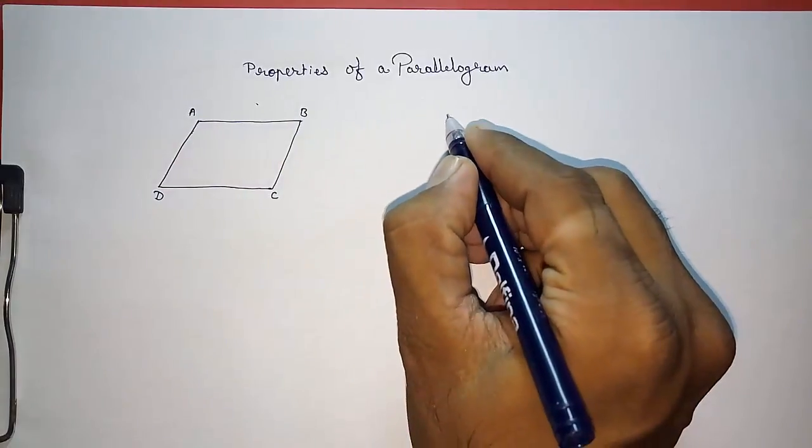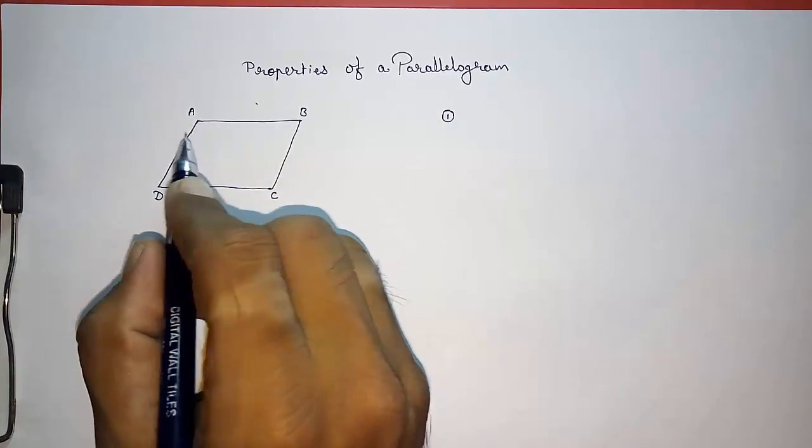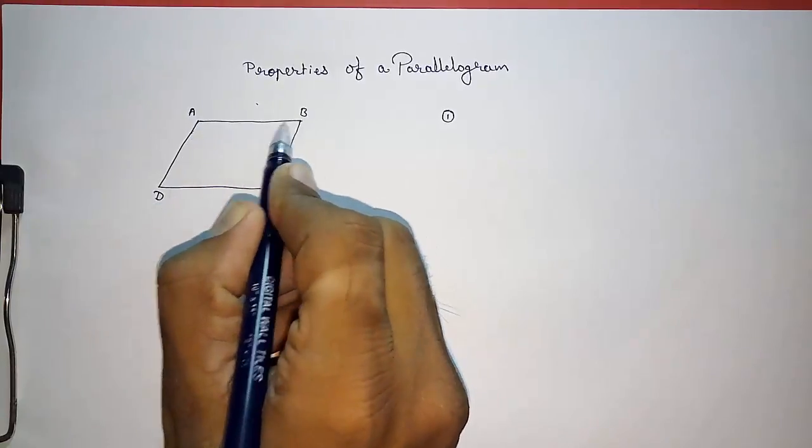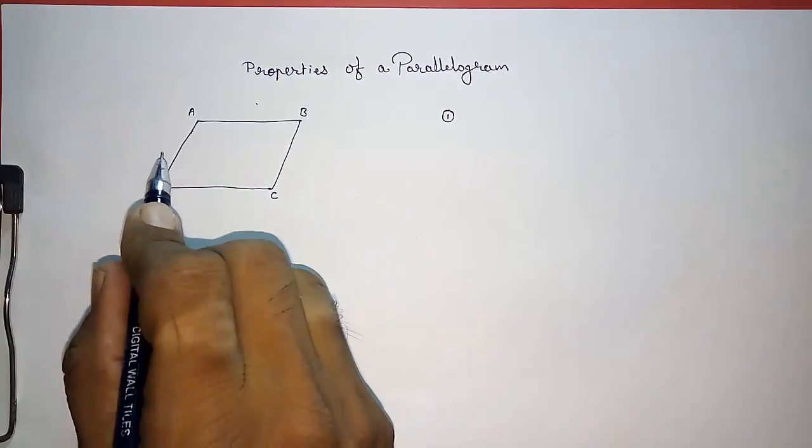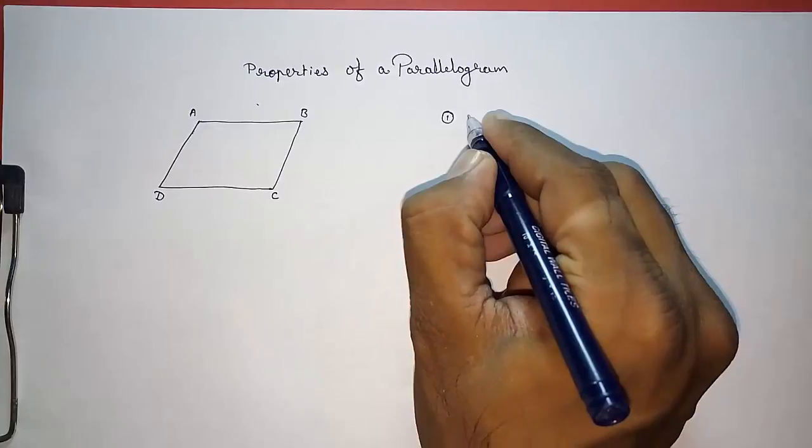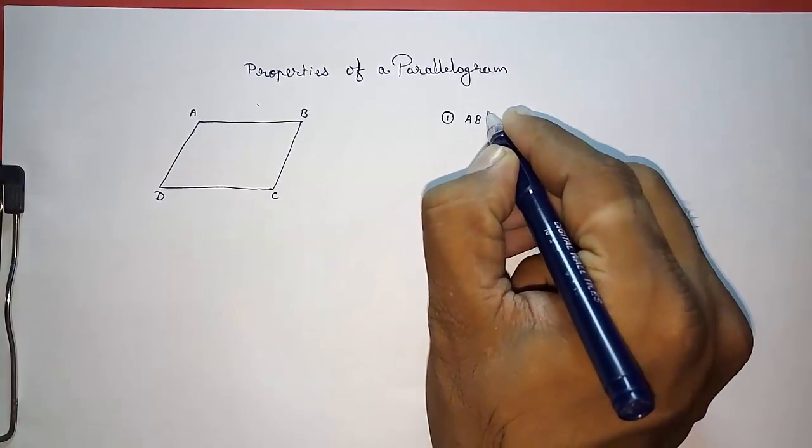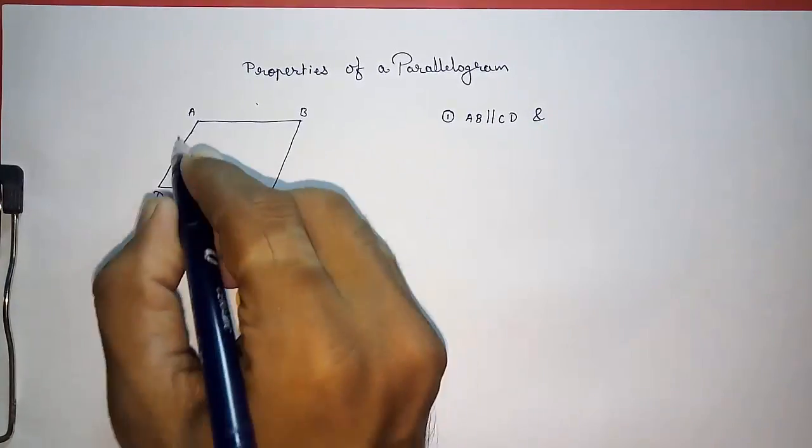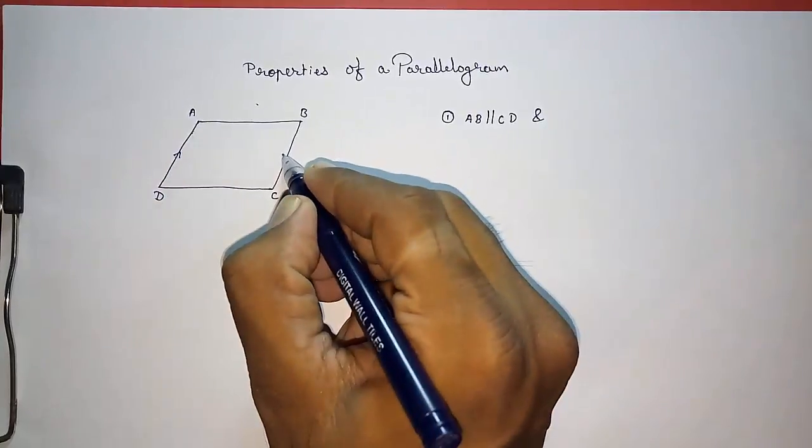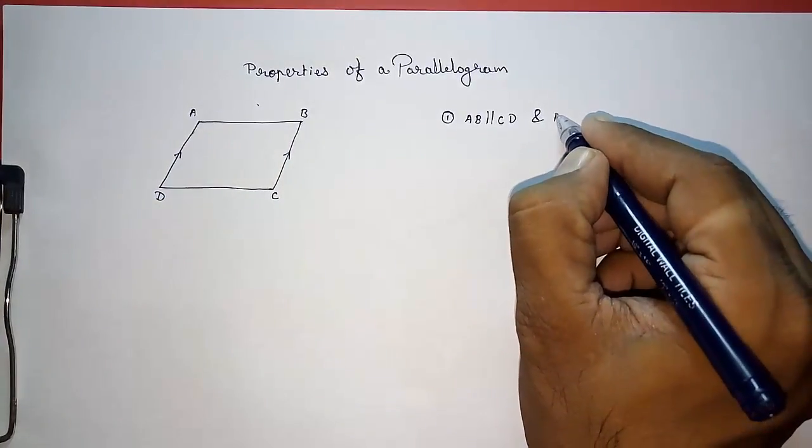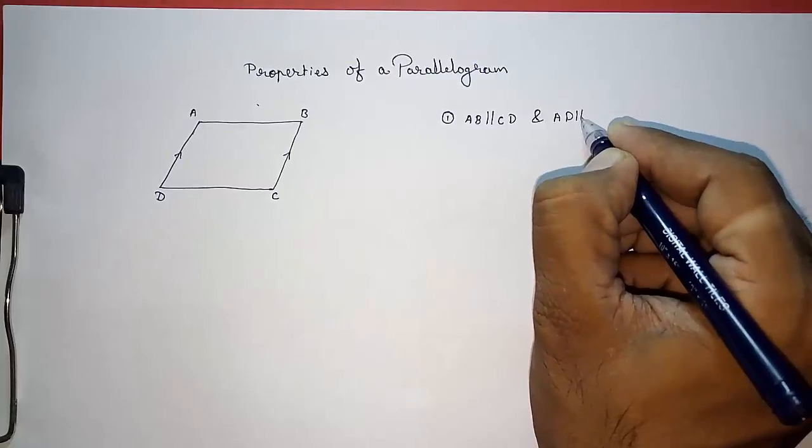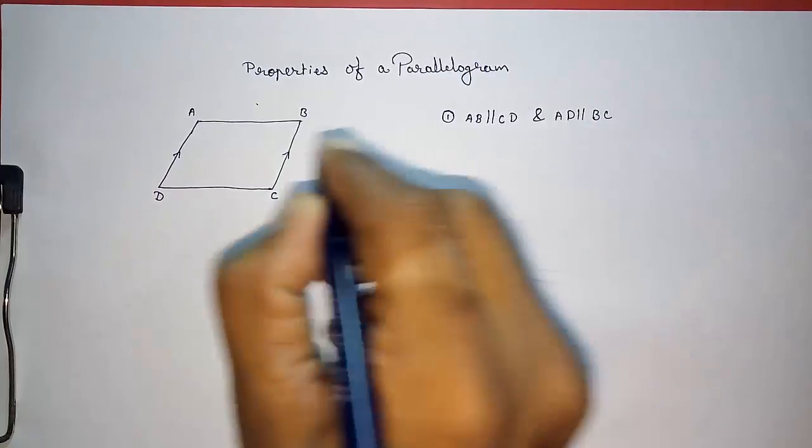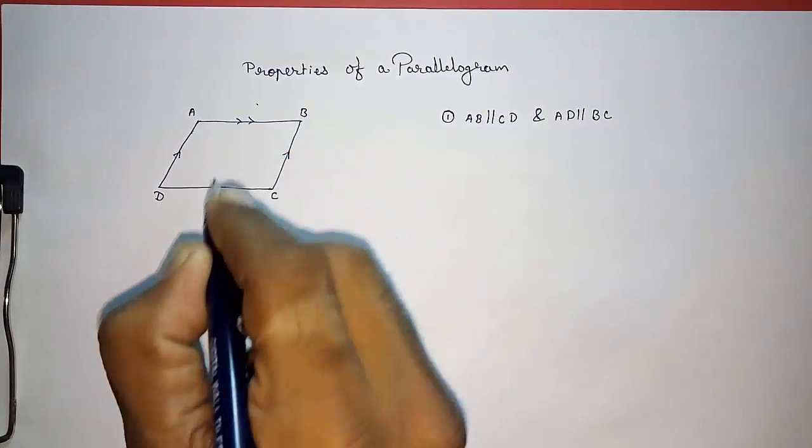Now, property one: in a parallelogram, both pairs of opposite sides are parallel. This means I can say AB is parallel to CD. I'm drawing arrows so that you can see AD is parallel to BC. This is the first property.